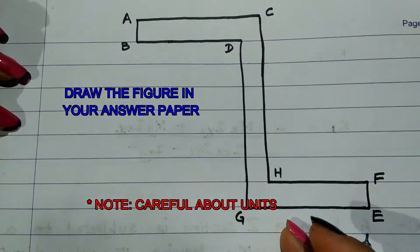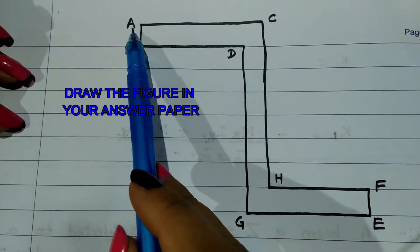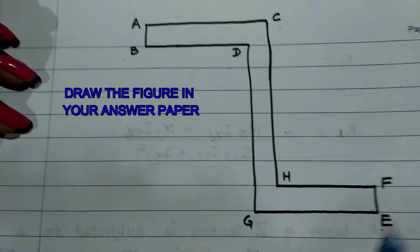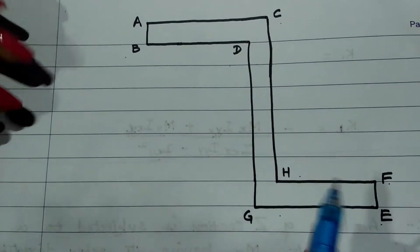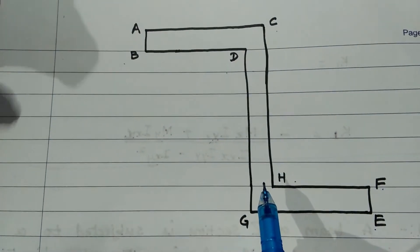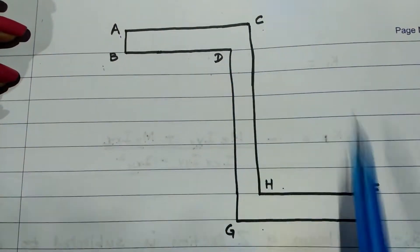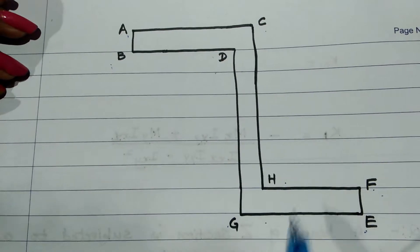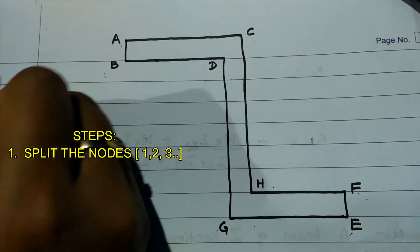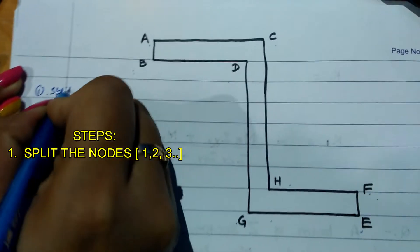After reading the question, draw the diagram — it's very important. Mention the labels of points A, B, C, D, E, F, G, H accordingly, exactly as given in the question paper. Now we need to follow six steps. The first step is to split the nodes.